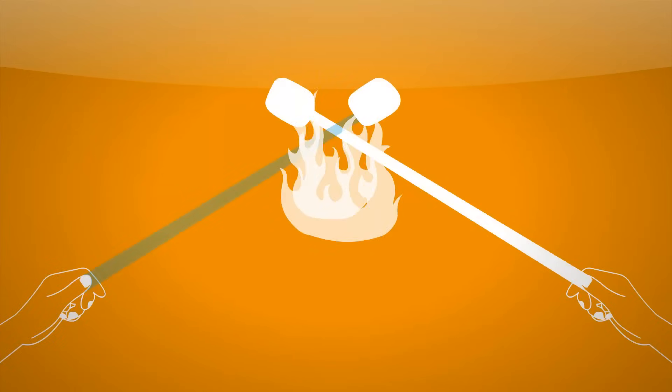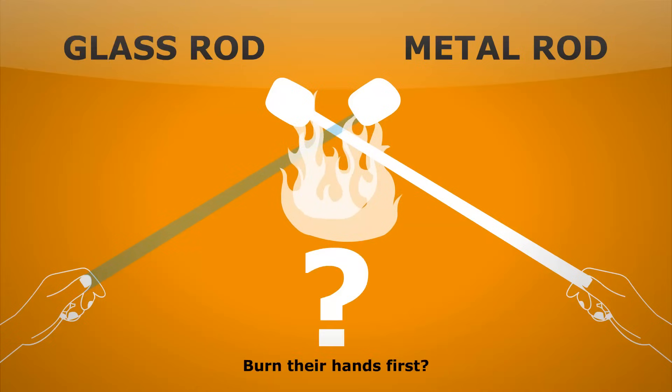Conduction. Here we see two likely lads toasting some marshmallows on an open fire. One of them has chosen a metal rod to put their marshmallow on the end of. The other one chose a glass rod. Which one of them do you think is going to burn their hands on their rod first?